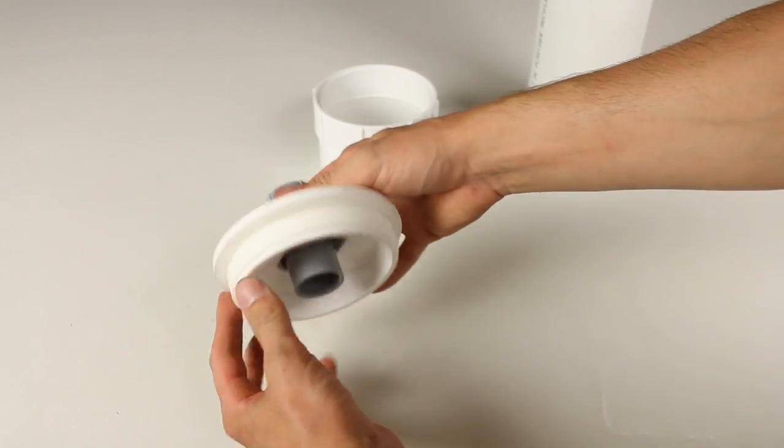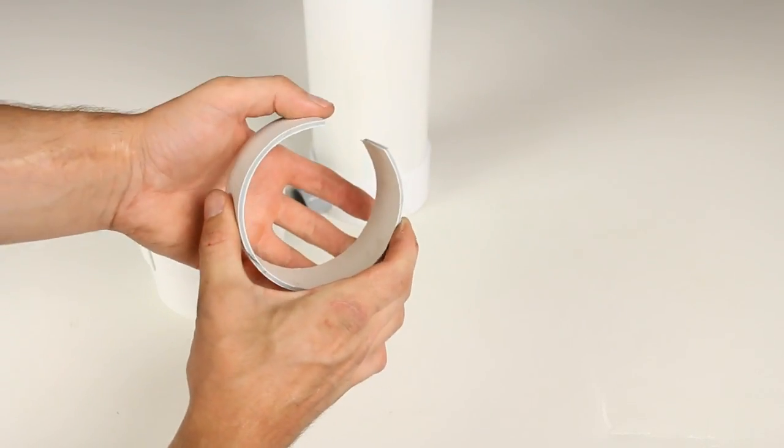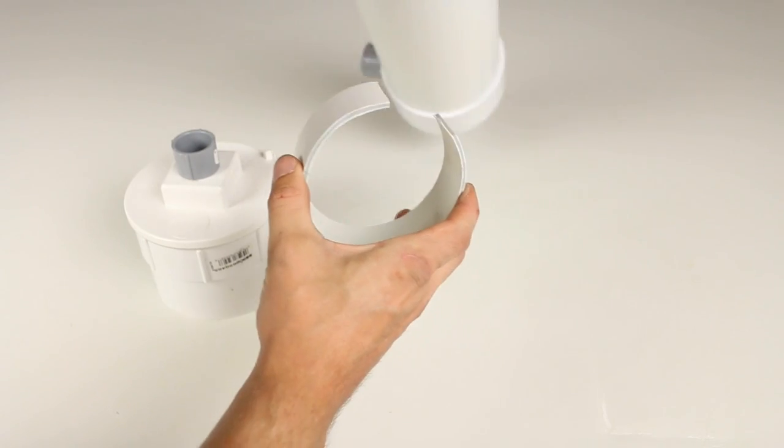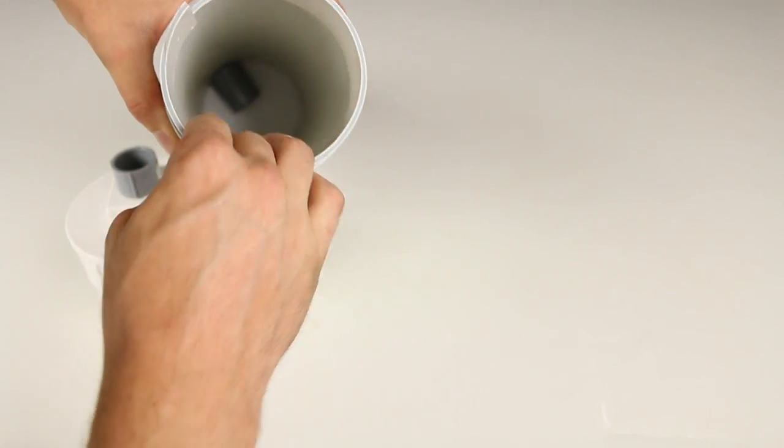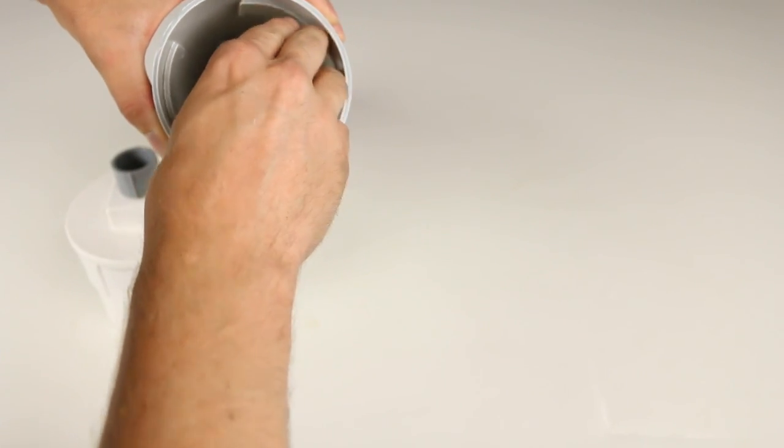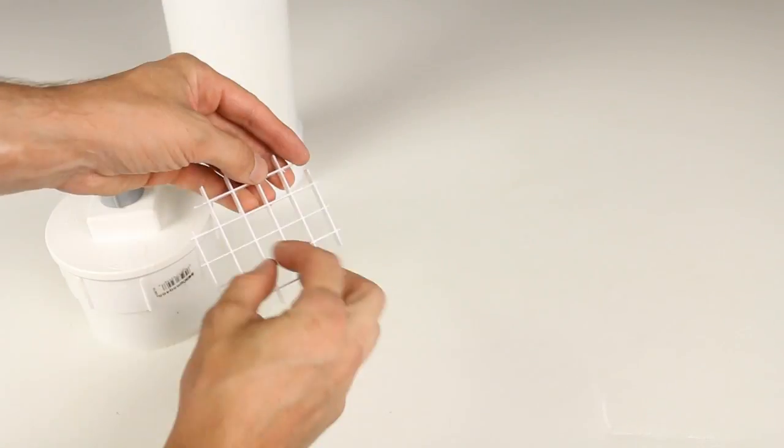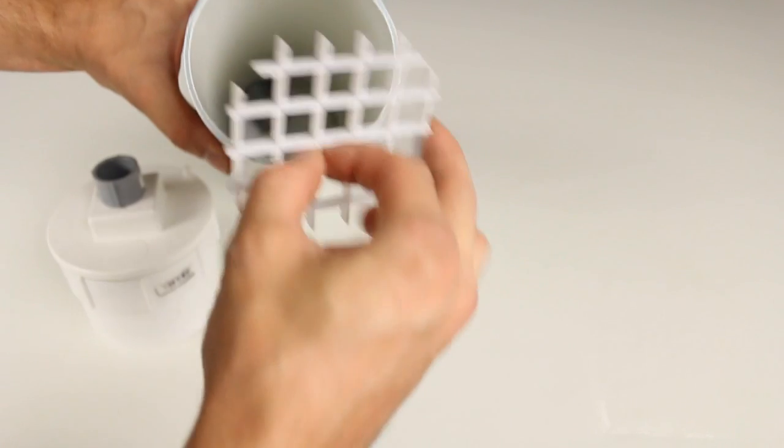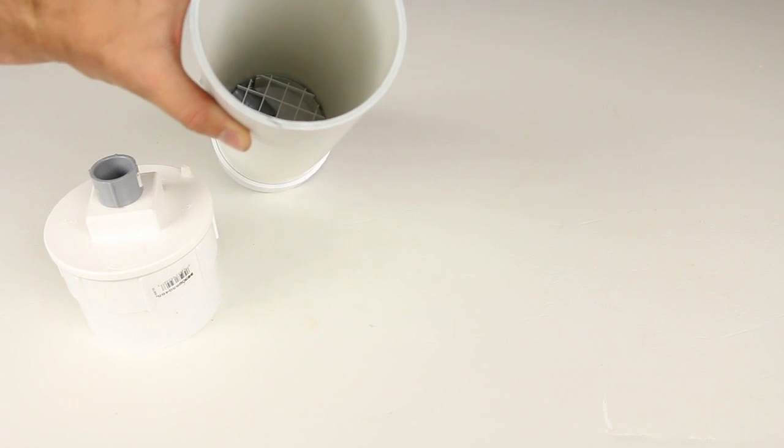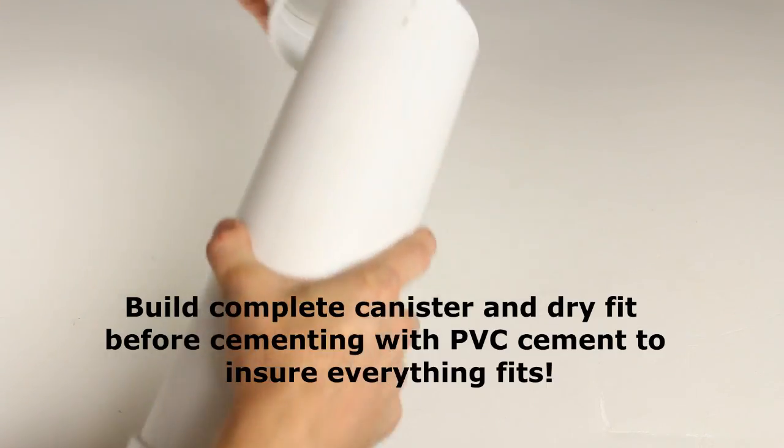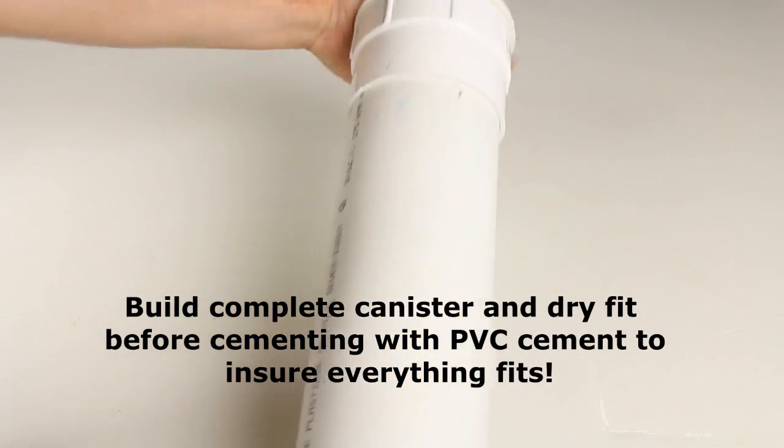Now since I'll be adding loose media to this canister I didn't want it to block the output so I cut a small piece of PVC pipe taller than the actual bulkhead and cut a section out of it so it would slide right around it. I then cut a small piece of lighting diffuser to place on top of it but you can use some mesh screening like I did in the original canister filter video that I showed you in the past. This will hold the media above the bulkhead and allow for unrestricted flow.